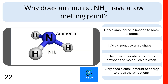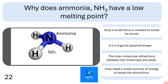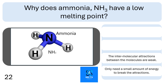Question 22. Why does ammonia, NH3, have a low melting point? There may be more than one correct answer here. Is it because it only has a small force needed to break the bonds, it is trigonal pyramid shape, the intermolecular attractions between the molecules are weak, or they only need a small amount of energy to break the attractions? It's the last two that are correct: it has weak intermolecular attractions between the molecules, so therefore only a small amount of energy is needed to break the attractions.